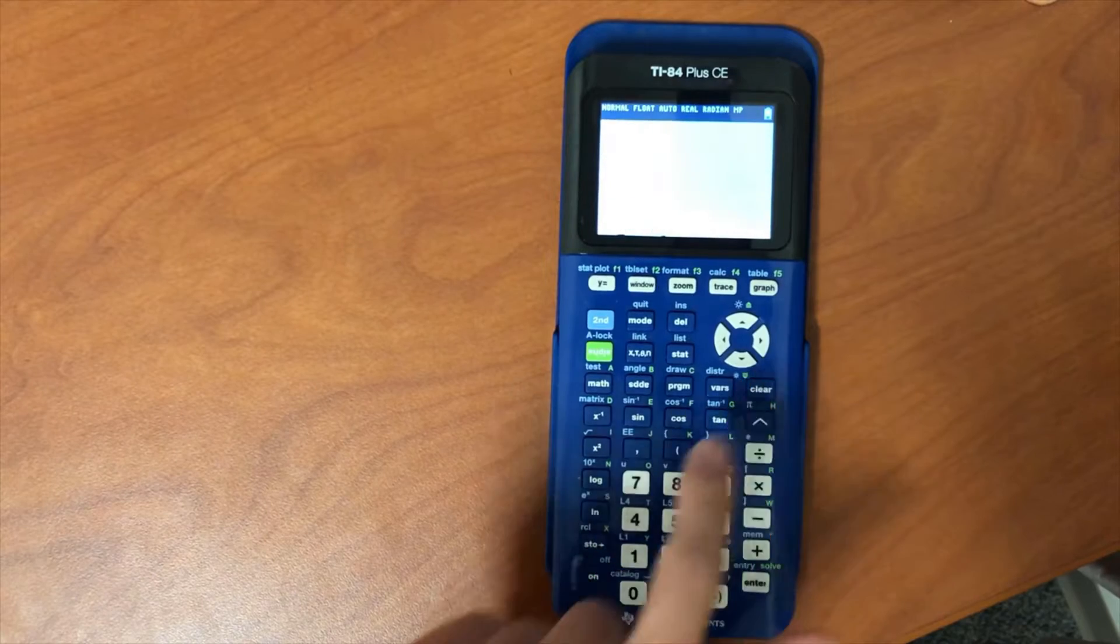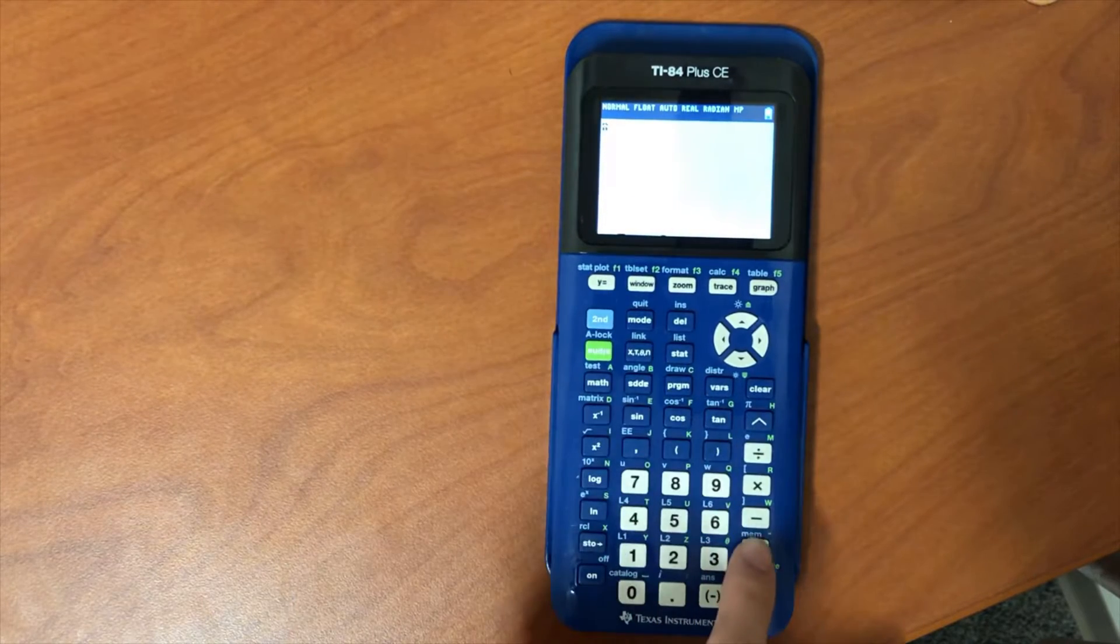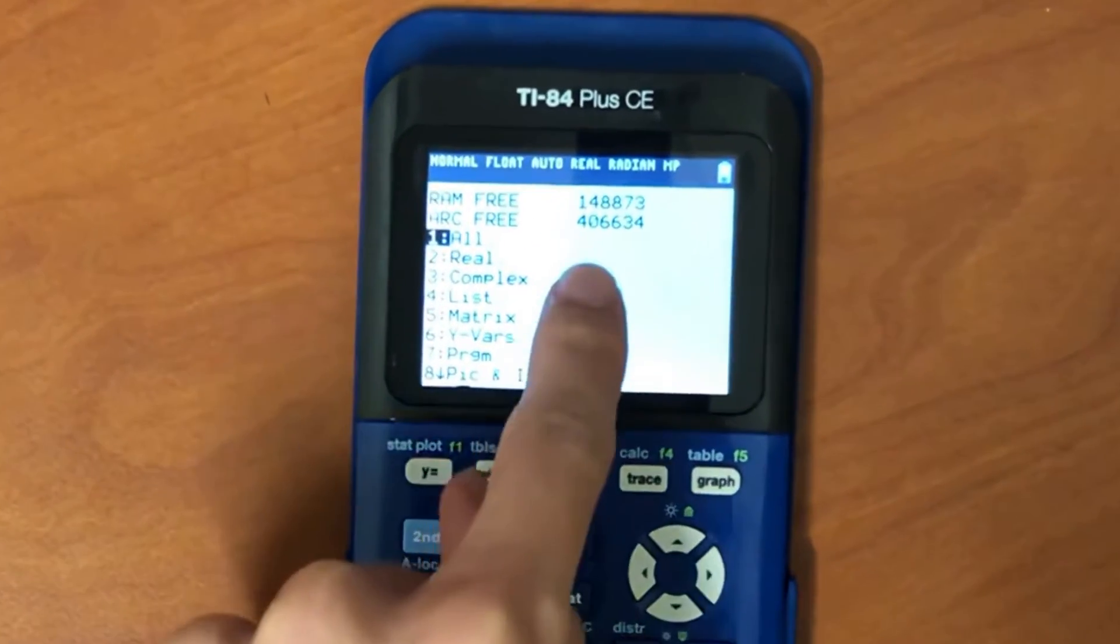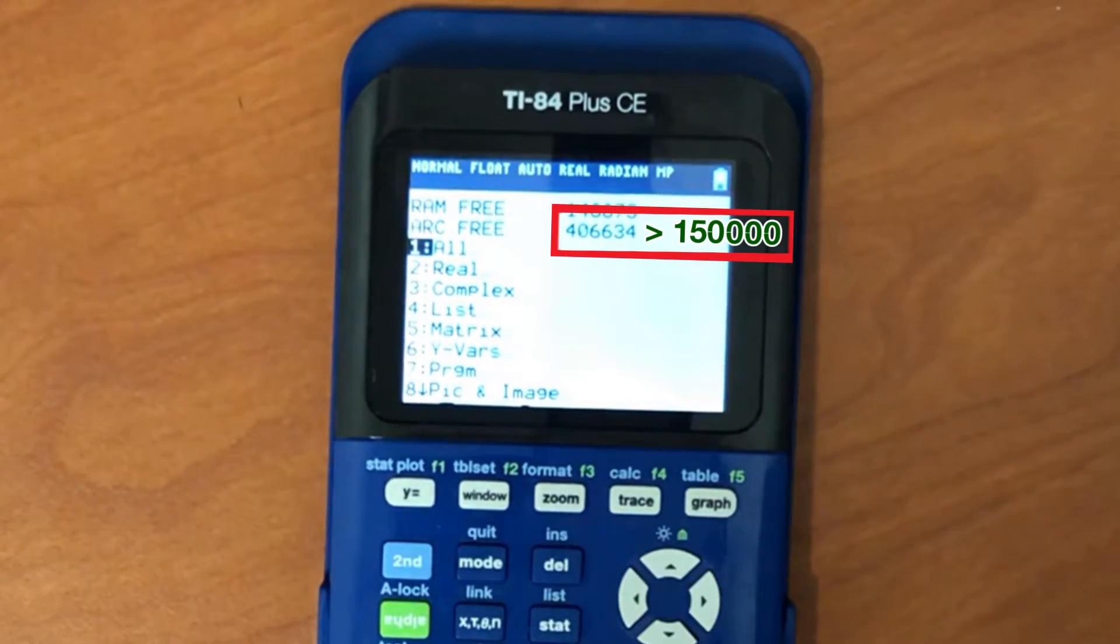Next, press 2nd, plus, then 2, and check that you have at least 150,000 bytes of archive free. If you have less than that, then you need to delete files to make space for the files you have to install.